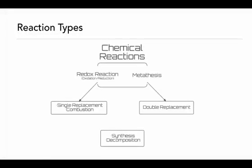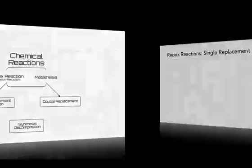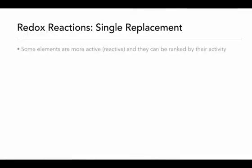This is the second in our series of videos dealing with reaction types. In this video, we're going to focus on single replacement reactions, which are a subtype of redox reactions. In a single replacement reaction, we have to understand that some elements are going to be more active than other elements, and we can rank these elements by their reactivity.